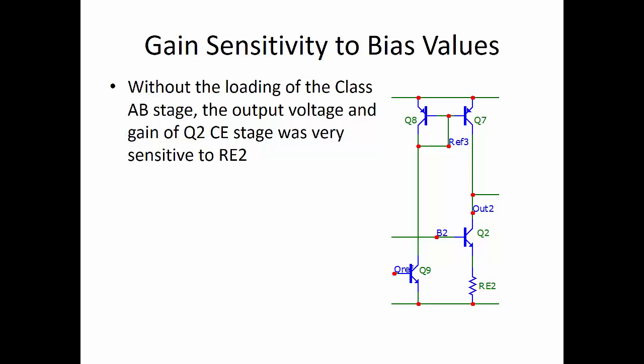Now, what about the gain sensitivity to the bias values? If you look at that very last example, the gain of that stage was very, very highly dependent upon RE2, because RE2 essentially balanced the current between Q2 and Q7, made sure that they had the same collector current and that they were matched. On the other hand, only a half a volt difference could cause the output to rail on that amplifier, which, of course, is not a very good way to build an amplifier.